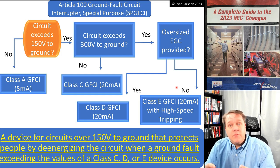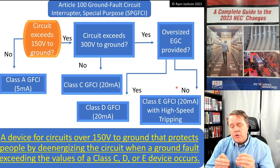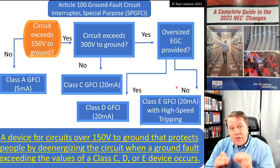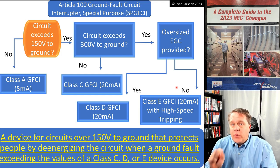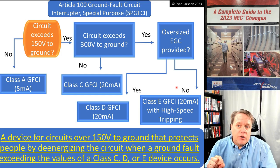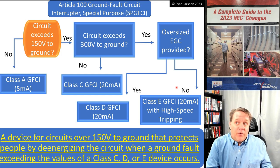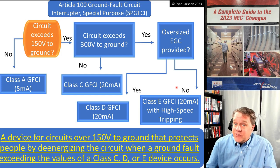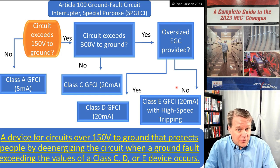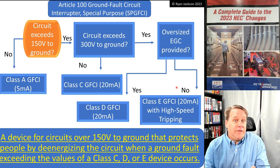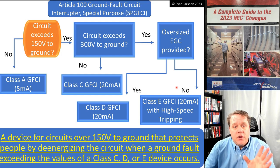Class C, D, and E don't trip if ground fault current is less than 20 milliamps — because with higher voltages comes higher leakage current. When you put 480 volts on a circuit, you stress the dielectric strength of the conductor insulation, and you will get six milliamps of leakage current whether you like it or not. You can't put a regular Class A GFCI on a 480-volt circuit because it will just trip — nuisance tripping. We want the swimming pool motor to actually turn on, but we also want the increased safety that a GFCI provides.